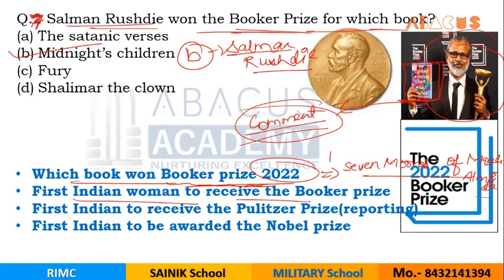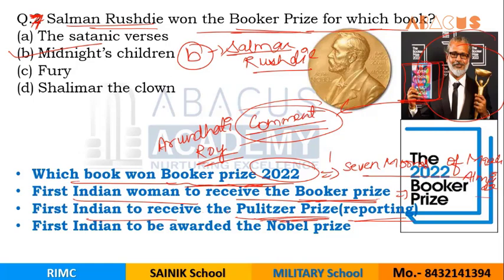The first Indian woman to receive the Booker Prize is Arundhati Roy. The first Booker Prize in the women's category went to Arundhati Roy. Then, the first Indian to receive the Pulitzer Prize — the Pulitzer Prize is given for reporting — is Govind Biharilal.